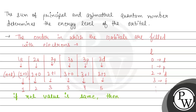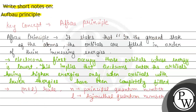If the n plus l value is the same, then check the value of n, which is the principal quantum number. The orbital with lower n value is filled first, then the next one. In this way, electrons are filled in the orbitals. This was the final answer. Hope the solution was understandable, thank you.